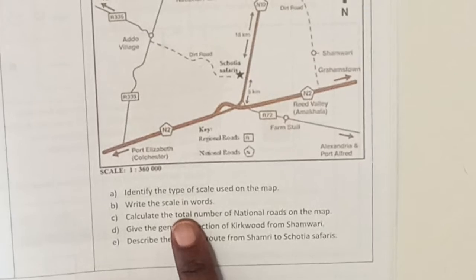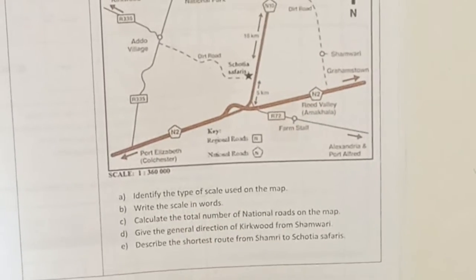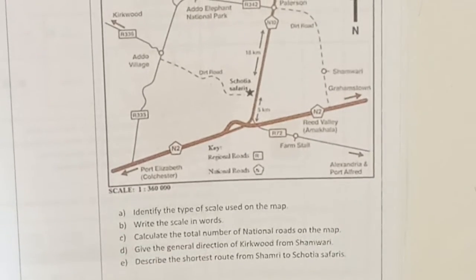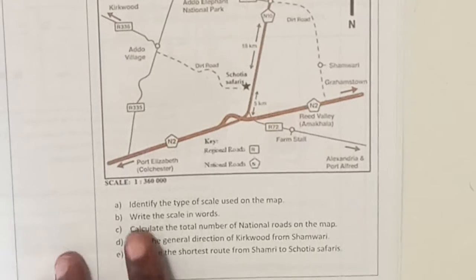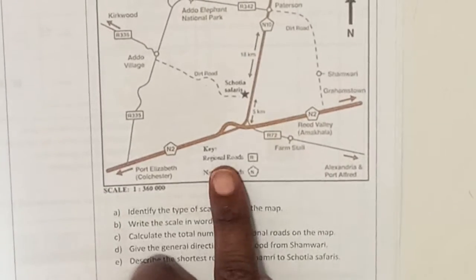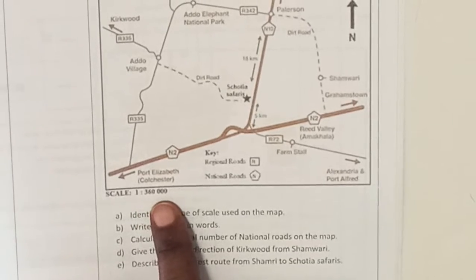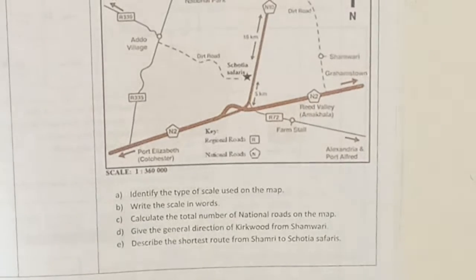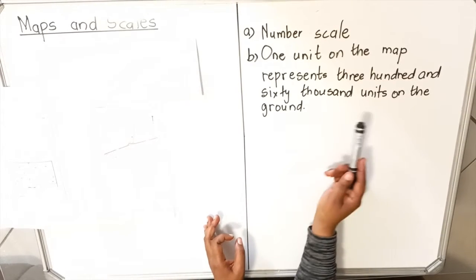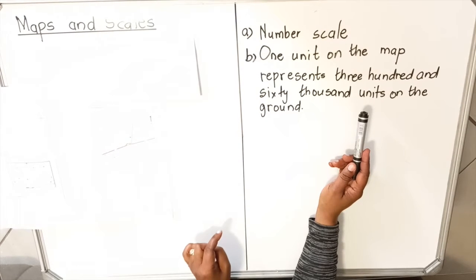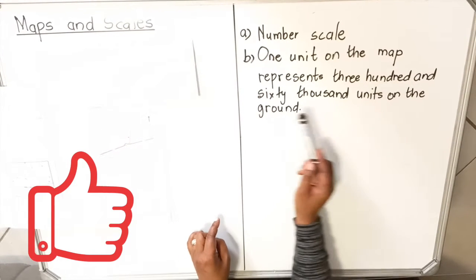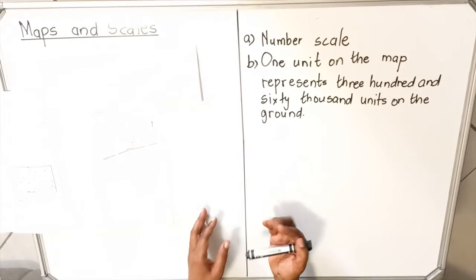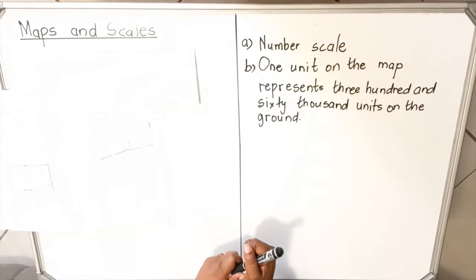Question B asks you to write the scale in words — what does this scale represent in words? The answer is: one unit on the map represents 360,000 units in real life. That is what the scale says, written in words.